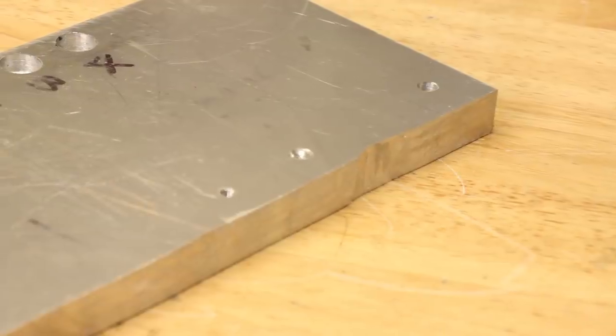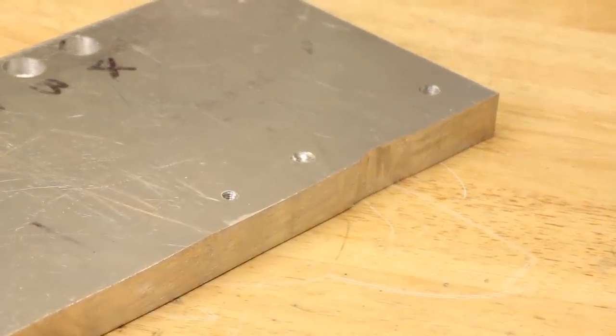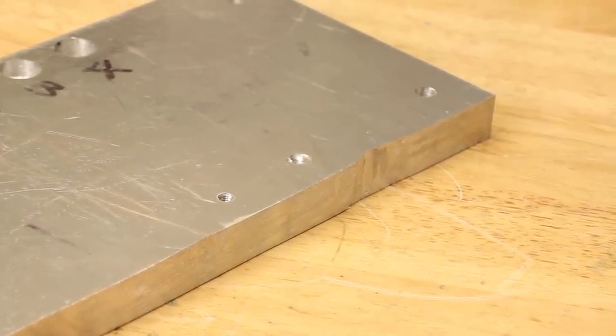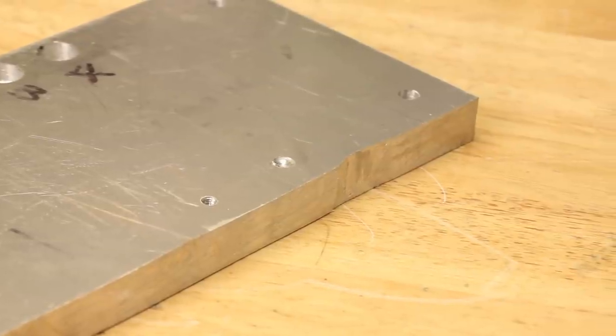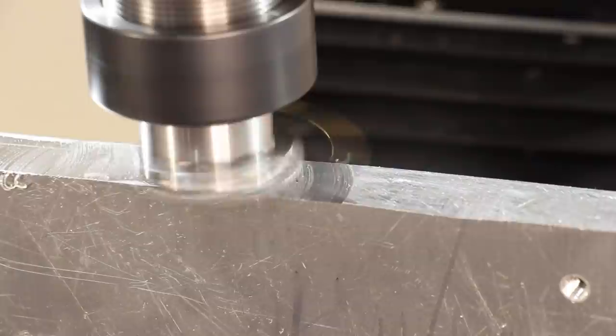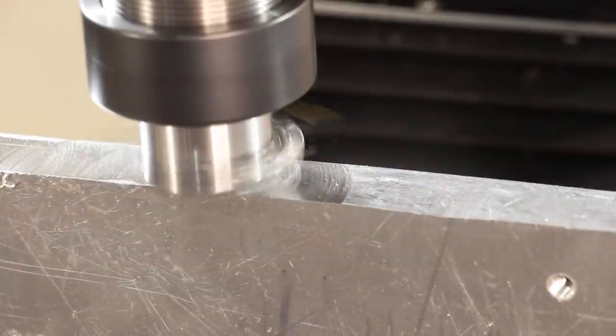Firstly, I want to clean up this edge. It was all cut by hand at the time using a hacksaw and an angle grinder, and I didn't have a mill to clean up the edge. So I'll quickly use the fly cutter to clean it up.